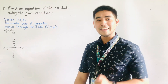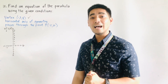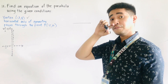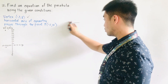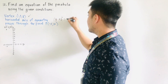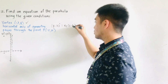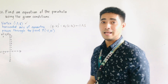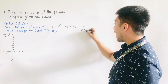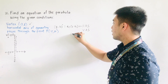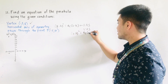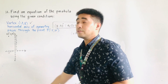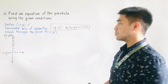We're done with that condition. For the second condition, we have horizontal axis of symmetry. Once we say horizontal axis of symmetry, since the line is horizontal, our parabola will have an equation: y minus k, quantity squared, is equal to 4c times x minus h. If we are dealing with horizontal axis of symmetry, this is the formula.